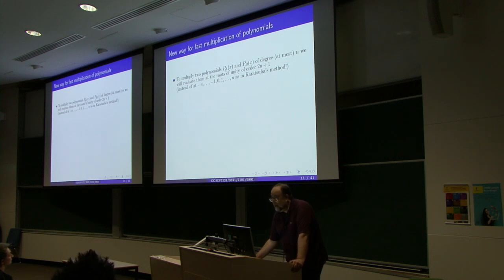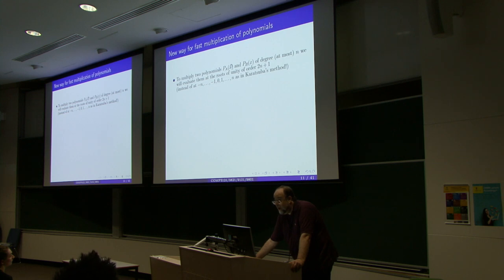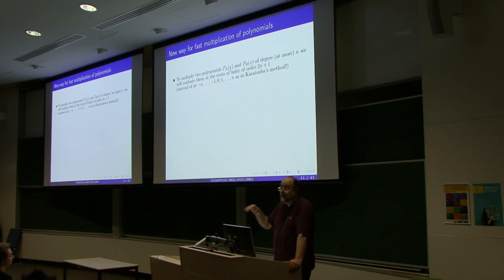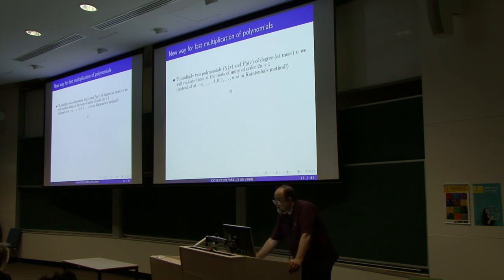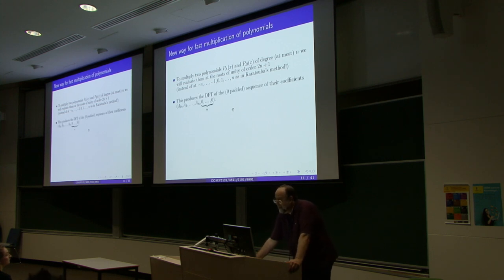Why do we use roots of unity? For two reasons. First, if the polynomial is of degree n and you substitute x = n, you get values as large as nⁿ, which is gigantic even for small n like 10. Roots of unity, taken to any power, remain on the unit circle—they just spin around but their size doesn't grow at all. Second, the evaluation of both polynomials at roots of unity can be done extremely fast, in time n log n, as we will see.